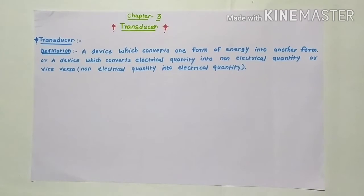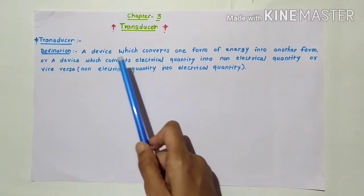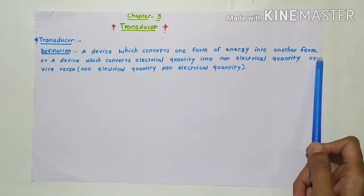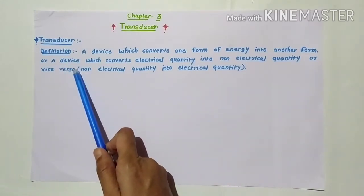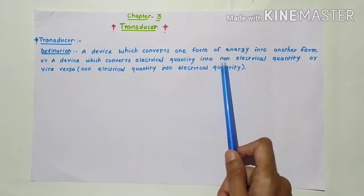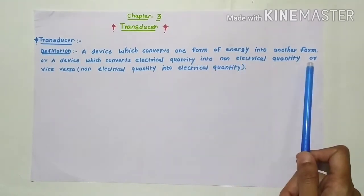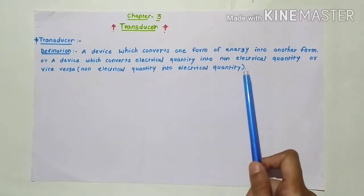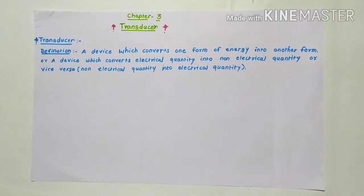Hello students, in the previous lecture we studied chapter number 2 on DC power supplies. In today's lecture we are going to learn about transducers — this is chapter number 3 from paper 1. A transducer is a device which converts one form of energy into another form, or it is a device which converts an electrical quantity into a non-electrical quantity or vice versa.